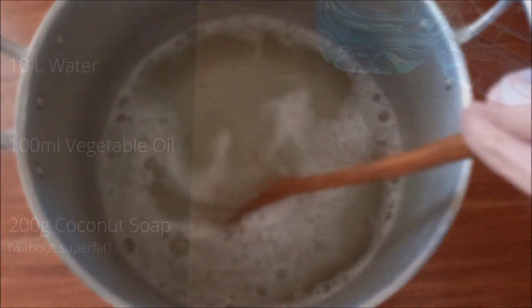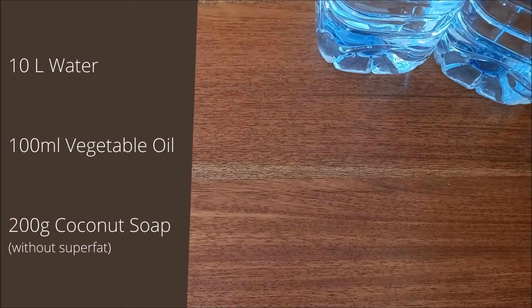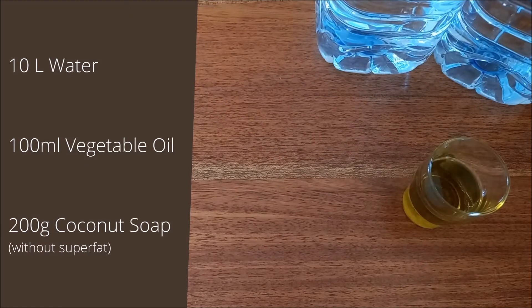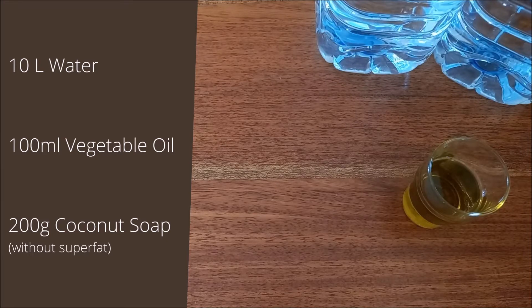To make this spray, you need 10 liters of water, which can be tap water or rainwater, 100 milliliters of vegetable oil - we use olive oil but other vegetable oils can be used - and 200 grams of 100% coconut soap with no super fat, as it is highly effective in fighting pests.